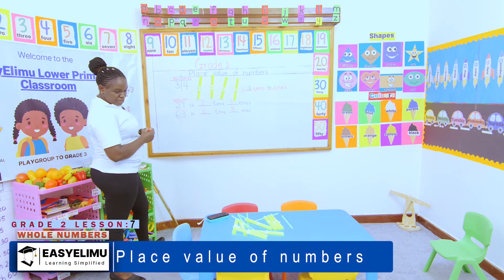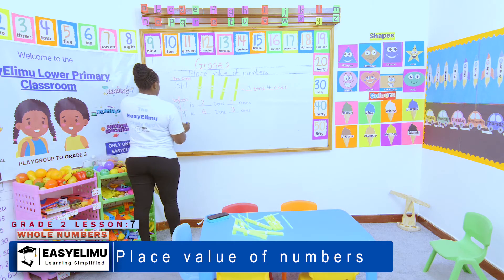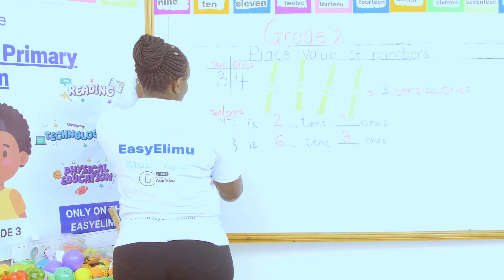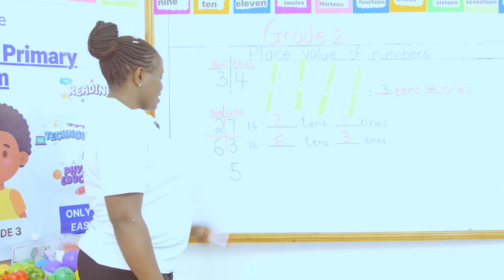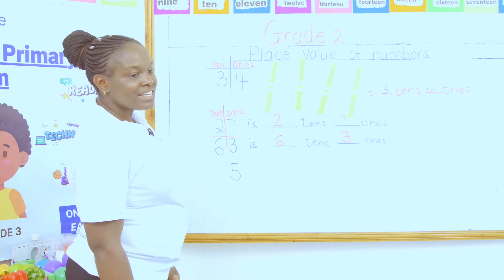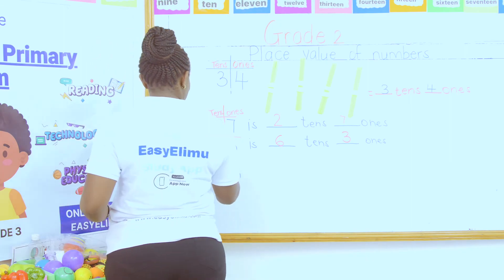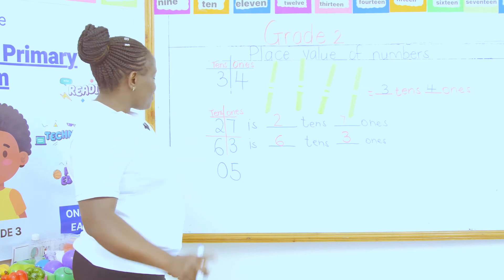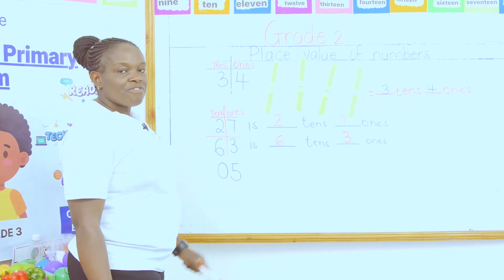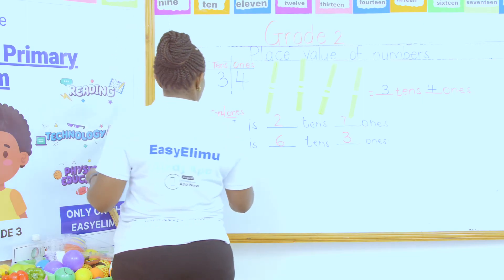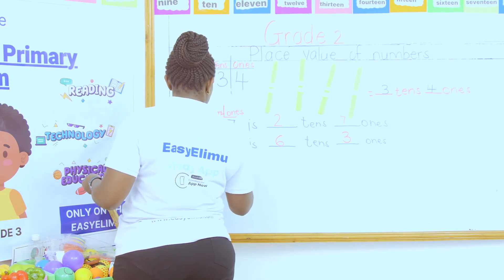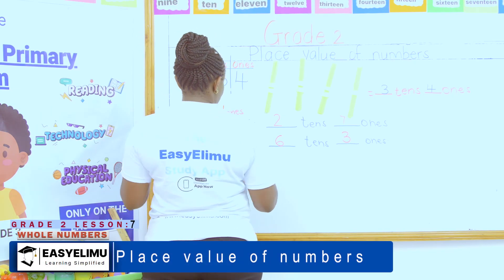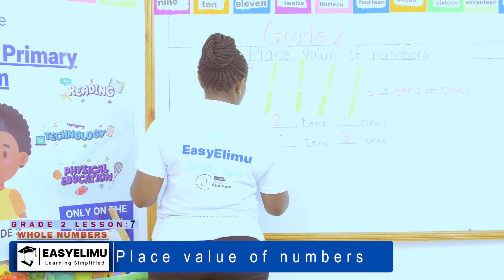Teacher, what if you have been given one number? Oscar says: I have been given the number five only. What happens here is that the number five can also be written as zero five. You don't put zero after five — you put zero before five. Then use the place value chart as usual: five is dash tens, dash ones.